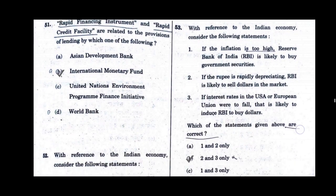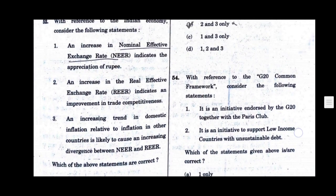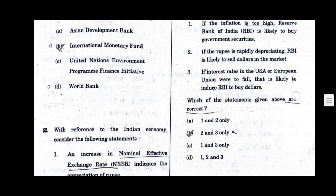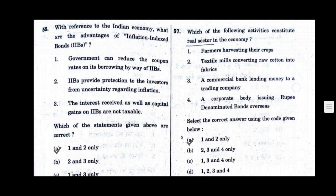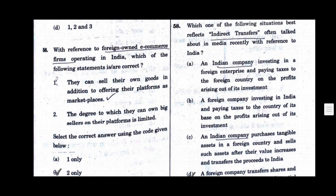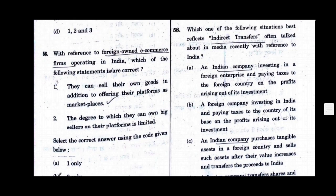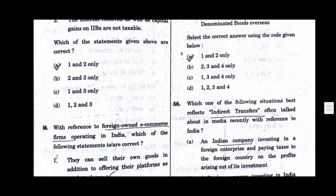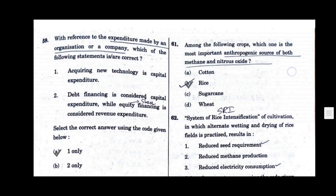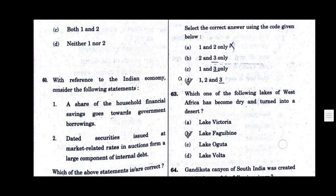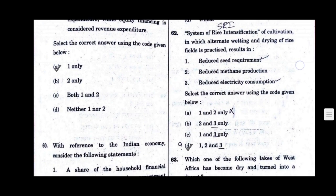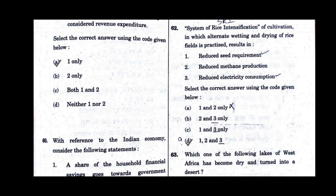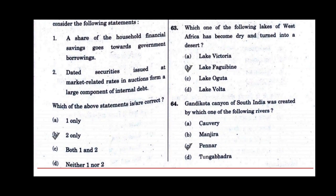Question number 51, option B will be the correct answer. Question number 52, option C will be the correct answer. Question number 53, option B will be the correct answer. Question number 54, option C will be the correct answer. Question number 55, option A will be the correct answer. Question number 56, option B will be the correct answer. Question number 57, option A will be the correct answer. Question number 58, option D will be the correct answer. Question number 59, option A will be the correct answer. Question number 60, option B will be the correct answer. Question number 61, option B will be the correct answer. Question number 62, option D will be the correct answer. Question number 63, option B will be the correct answer. Question number 64, option C will be the correct answer.